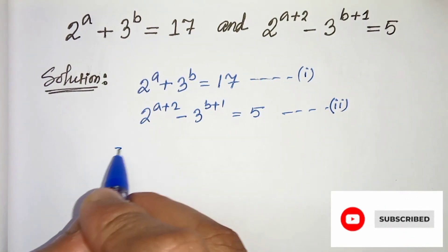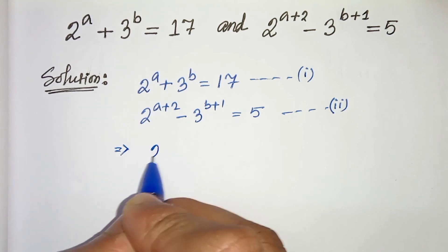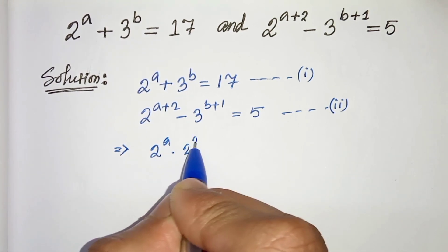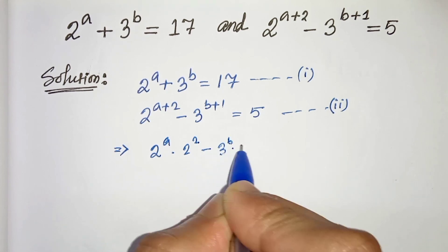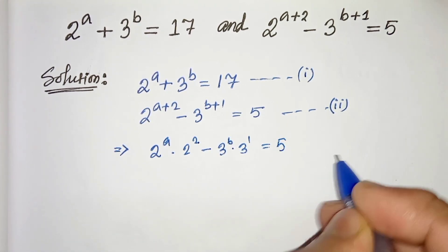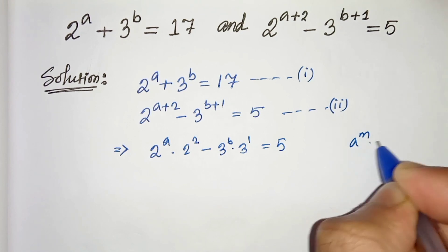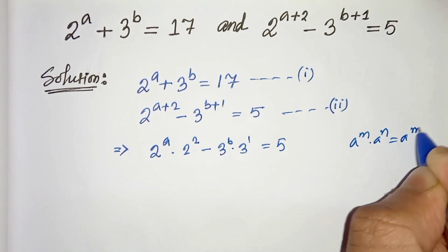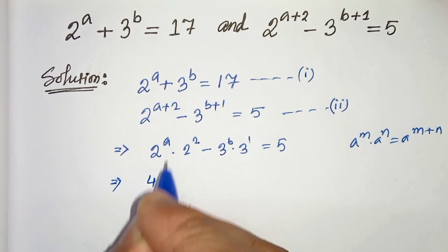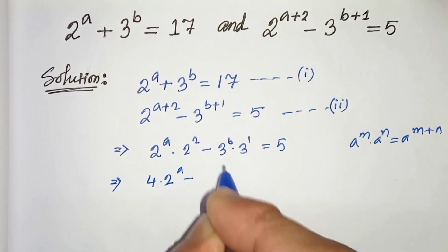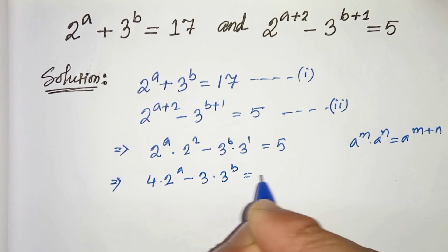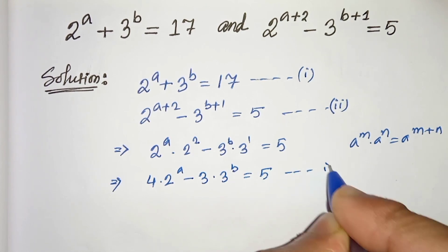Now let's simplify this. We will get 2 to the power a times 2 to the power 2 minus 3 to the power b times 3 to the power 1 equals to 5. We know that a to the power m times a to the power n can be written as a to the power m plus n. So 2 squared is 4, giving us 4 times 2 to the power a minus 3 times 3 to the power b equals to 5. This is our equation 3.